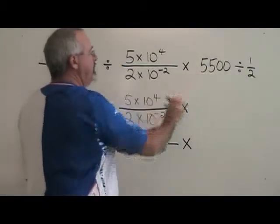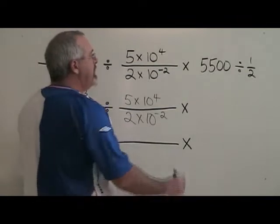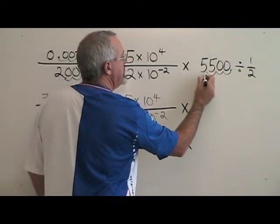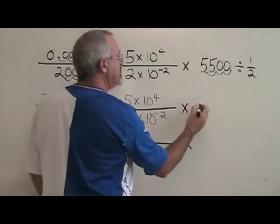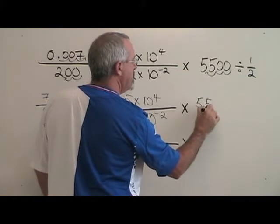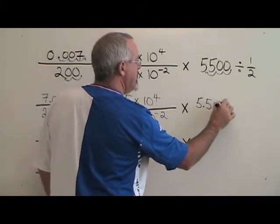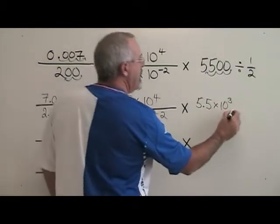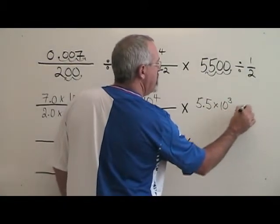Next I have this 5500. I am moving the decimal 1, 2, 3 spaces to the left. So 5500 becomes 5.5 times 10 to the 3. And then I have my divided by 1 half.